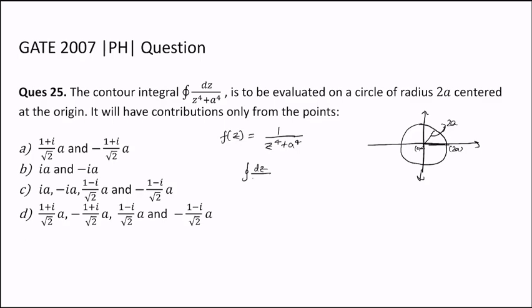We know from the Cauchy Residue Theorem that this integral will be nothing but 2πi times the sum of the residues of the function f(z) at all poles which lie inside this contour. We need to find the residue of the function at those poles, and the summation of that times 2πi will give us this integral.